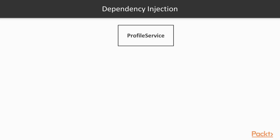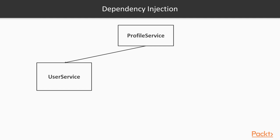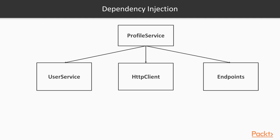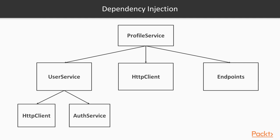This is an example dependency tree from a real-world application. Let's say we have a profile service that depends on three other components: a user service responsible for fetching details about a user, an HTTP client whose responsibility is to perform HTTP requests to a third-party API, and a class that contains the endpoints the HTTP client is supposed to hit. Each component has a single responsibility — the single responsibility principle is prevalent in most patterns. The user service also has an HTTP client and an authentication service as dependencies, while the HTTP client may depend on something like an XMLHttpRequest backend.